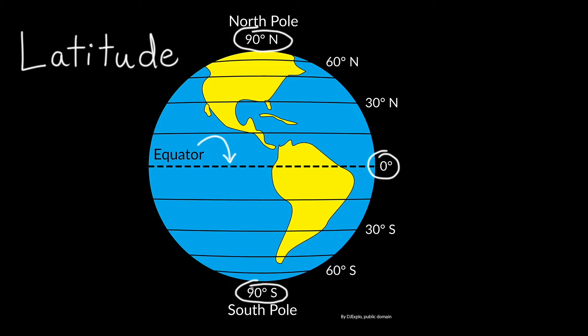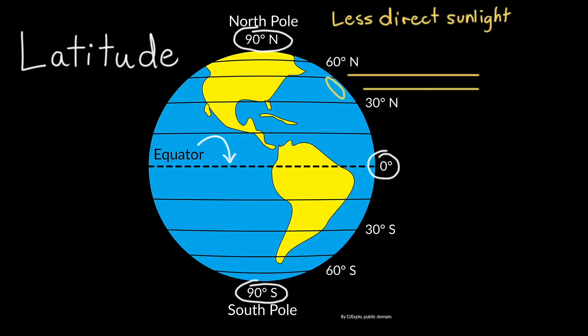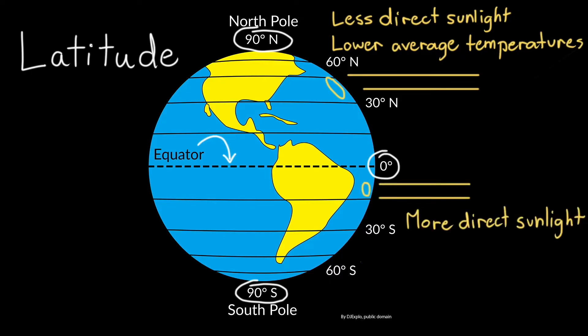The sun heats the planet unevenly, so places at higher latitudes, which are farther from the equator, get less direct sunlight and solar energy on average, resulting in lower average annual temperatures. Places at lower latitudes, being closer to the equator, get more direct sunlight and solar energy on average, which results in higher average annual temperatures.